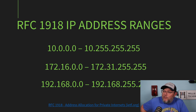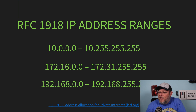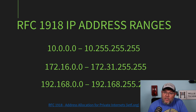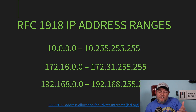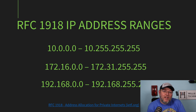The first range is 10.0.0.0 through 10.255.255.255 — that is a slash 8. Then you've got 172.16.0.0 through 172.31.255.255, which is a slash 12. And then you have 192.168.0.0 through 192.168.255.255, and that's a slash 16.